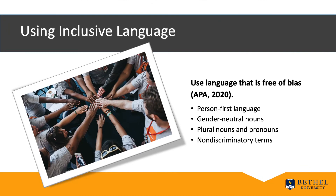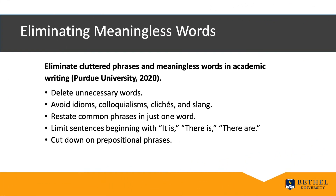To be accurate and sensitive to readers, use language that is free of bias. General guidelines include using person-first language, gender-neutral nouns, plural nouns and pronouns, and non-discriminatory terms to refer to minority groups. Students often use cluttered phrases and meaningless words in academic writing. To tighten the text, delete unnecessary adjectives and adverbs, restate common phrases in just one word, avoid idioms, colloquialisms, clichés, and slang, limit sentences beginning with 'it is,' 'there is,' and 'there are,' and cut down on prepositional phrases.